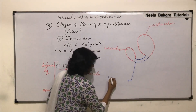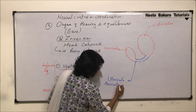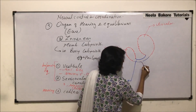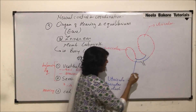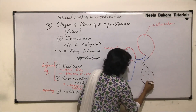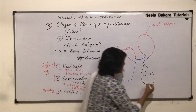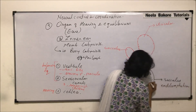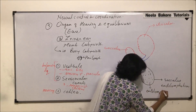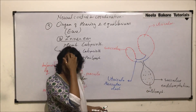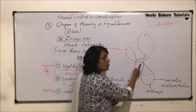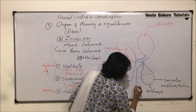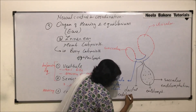The sacculus and utriculus are interconnected by a small narrow duct known as the utriculosaccular duct. From this utriculosaccular duct arises one more narrow duct which leads into a sac-like structure. This sac-like structure is filled with endolymph and is therefore known as sacculus endolymphaticus. Endolymph is a fluid filled inside the inner ear. The duct connecting the utriculosaccular duct to this sac is known as ductus endolymphaticus.